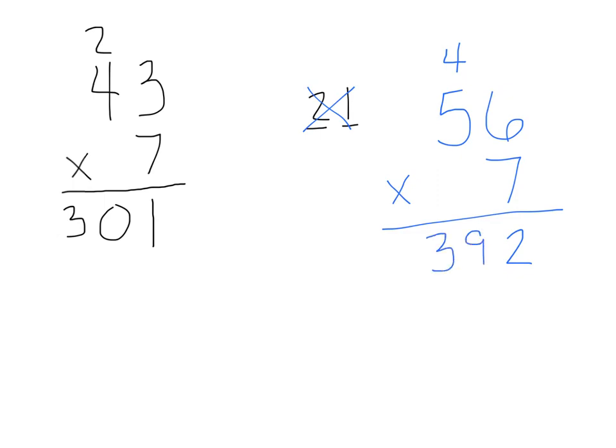So, the product of 56 times 7 is 392. Alright, thank you for listening. I would like you to go on to our guided practice tutorial.